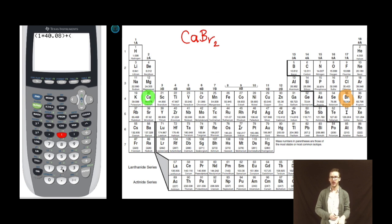I need to multiply it by two because of my subscript in my chemical formula. It's gonna be two times 79.904.